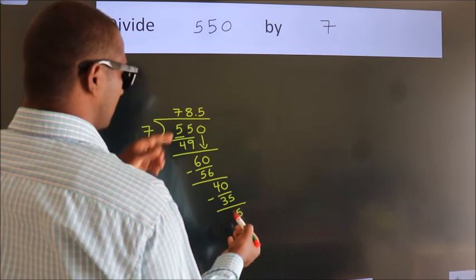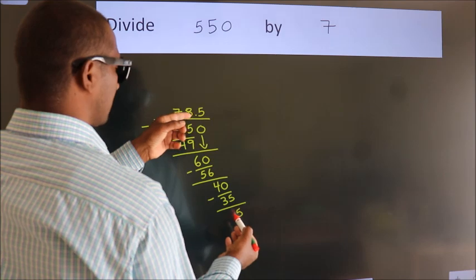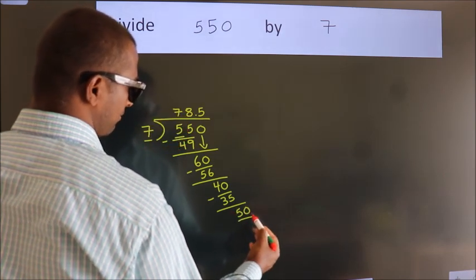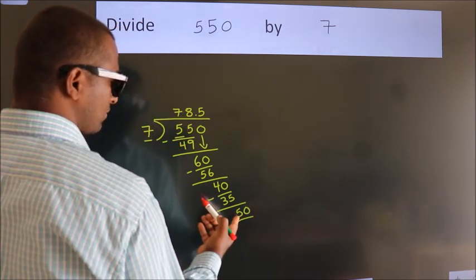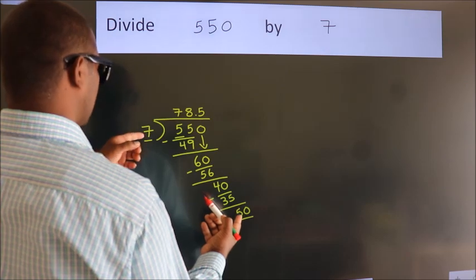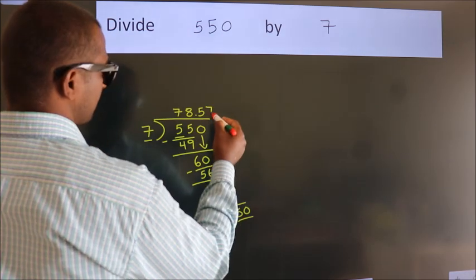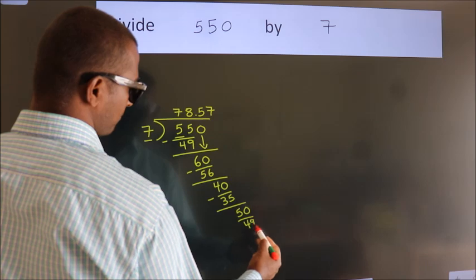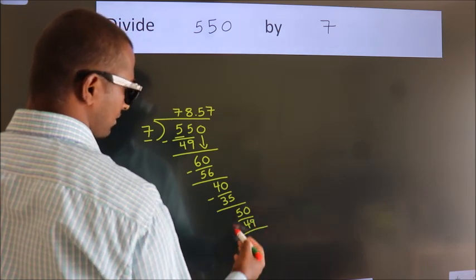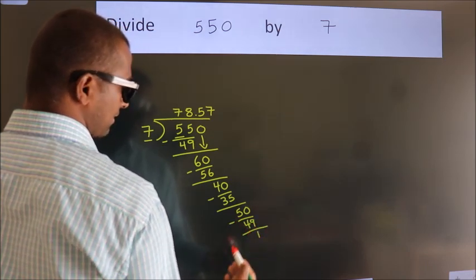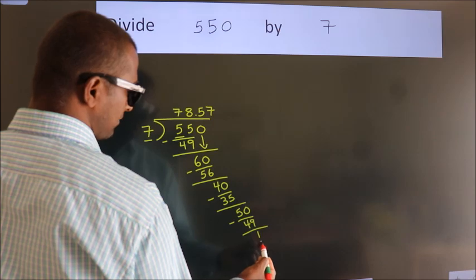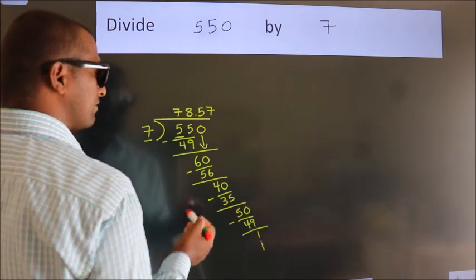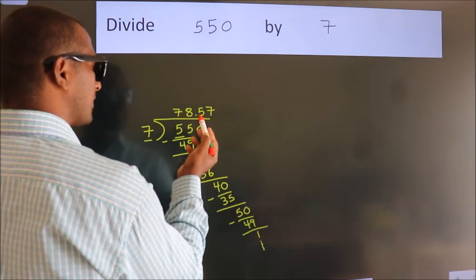After this, we already have the decimal, so directly take 0, making 50. A number close to 50 in the 7 times table is 7 sevens 49. Now we subtract, we get 1. The division continues, but it is enough if we do up to 2 decimal places.